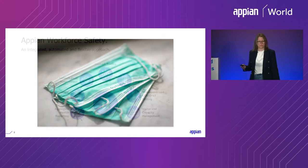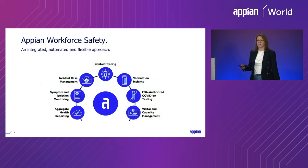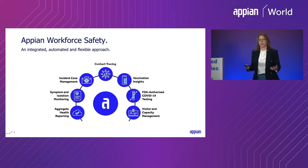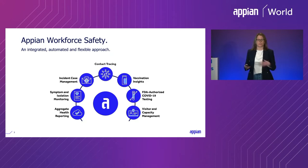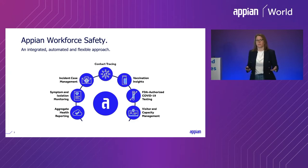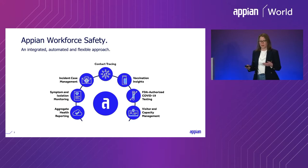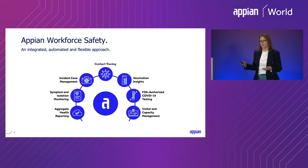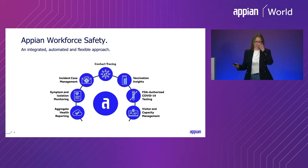Lives and livelihoods were at stake if there wasn't a proper response, so everybody was really pressured to do the right thing. How did Appian respond? One of the things that we did was workforce safety — an application that helped many companies track contact tracing and vaccine status and monitor personnel as they came into their workplace to make sure that everybody was safe.